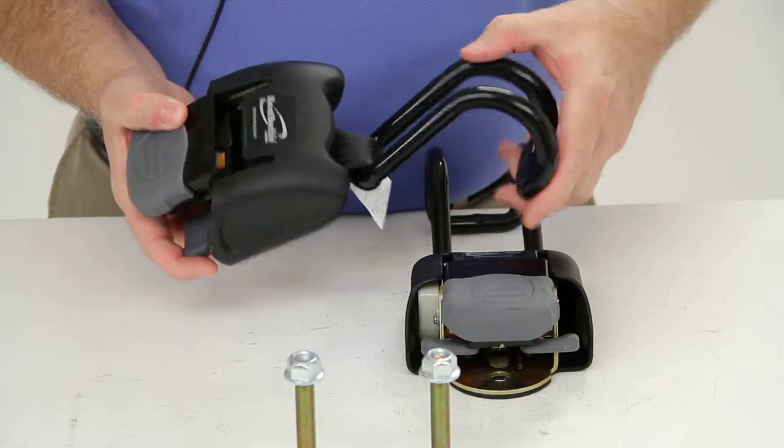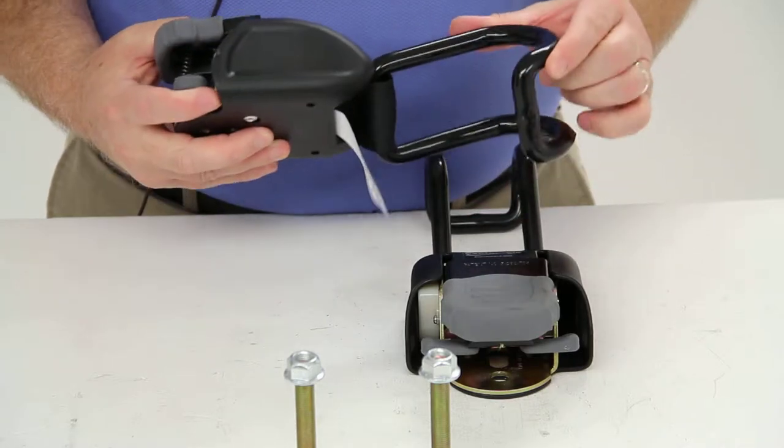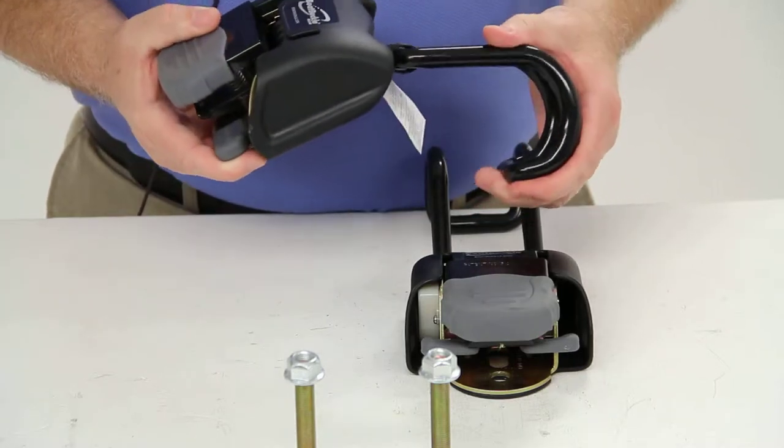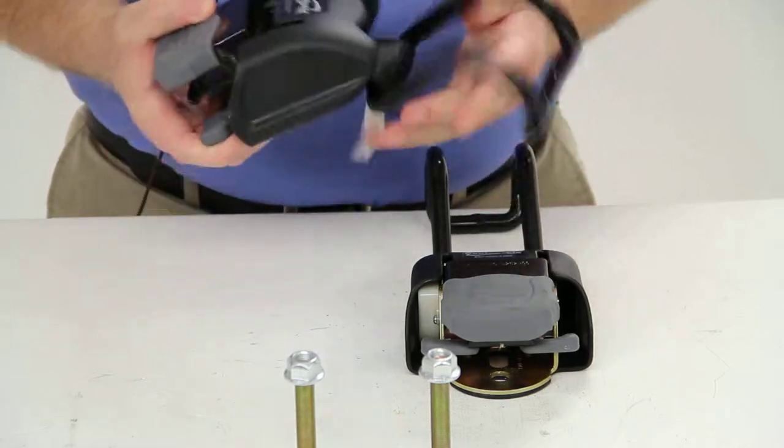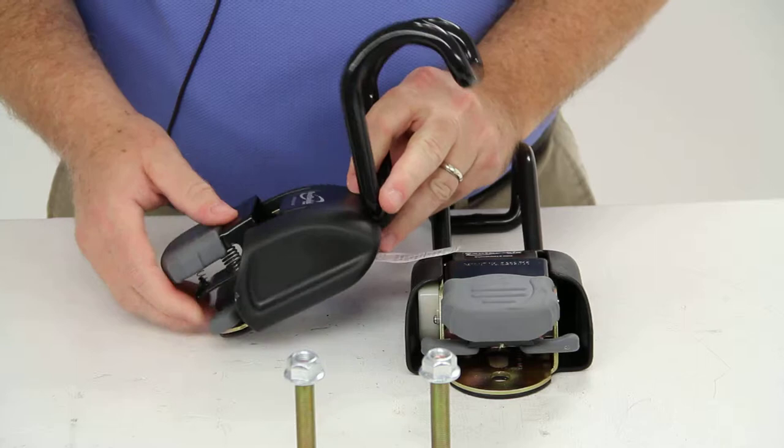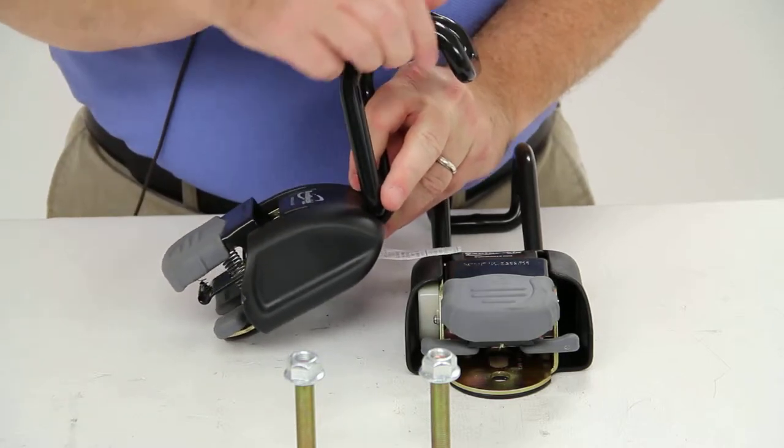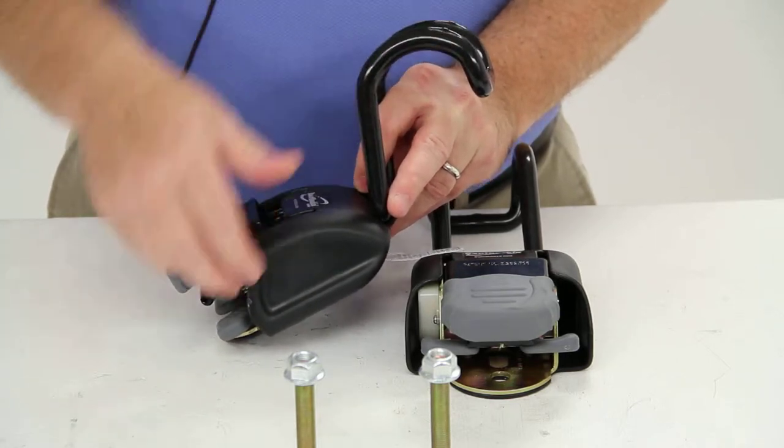These tie-down straps have a vinyl-coated double J-hook, which will help protect the finish of your boat. They do fit the gunwales on your boat if they are two inches wide or less.